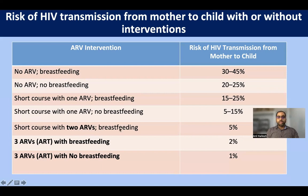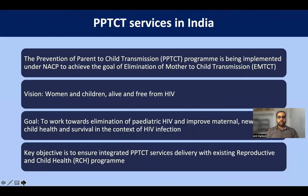If she is on a short course of two antiretroviral drugs and breastfeeding, the risk is 5%. With a short course of one ARV and no breastfeeding it is 5–15%, and with one ARV and breastfeeding it is 15–25%. If the mother is not taking any ART and is also breastfeeding, the risk increases to around 30–45%. This explains the critical importance of ART in pregnant and lactating women.